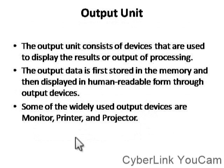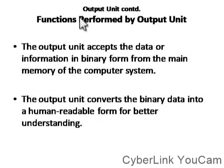Next, the output unit. It consists of devices used to display the result or output of processing. Some widely used output devices are monitor, printer, and projector. The output unit accepts the data or information in binary form from the main memory of the computer system. Because human cannot understand machine or binary format, it is the whole and sole responsibility of the output unit to convert the binary data into human readable form for better understanding.